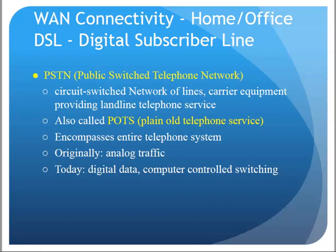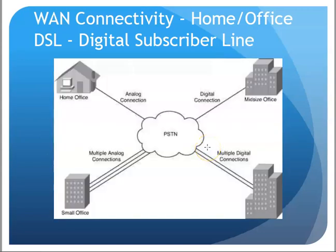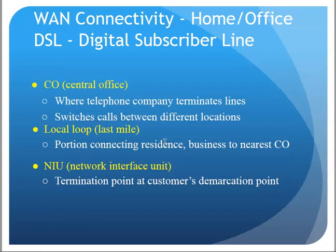Some of our first WAN technologies sit on the Public Switched Telephone Network — the plain old telephone system. This is the traditional analog phone network that a lot of early technology sat on. Companies and homes would use analog connections to connect to remote sites. A couple of terms to be familiar with: the central office, which is where the telephone company's equipment and switches were used to move data and process phone calls.